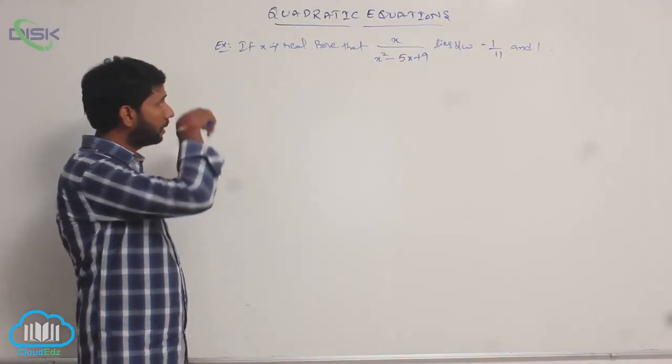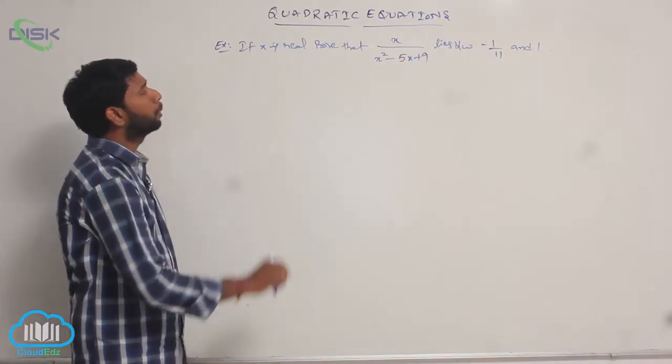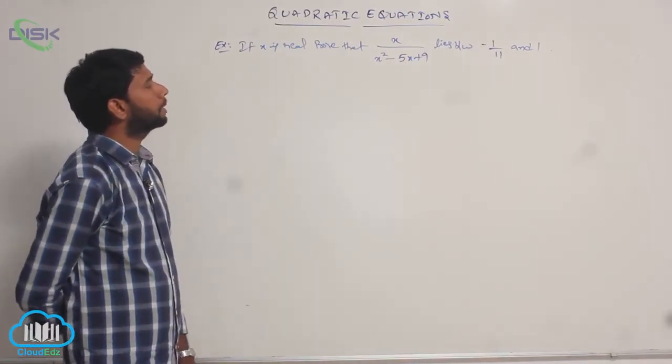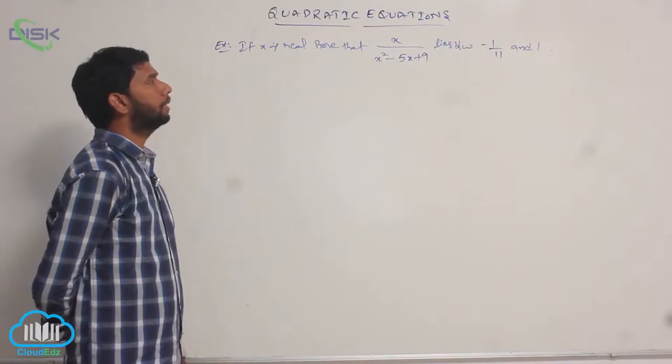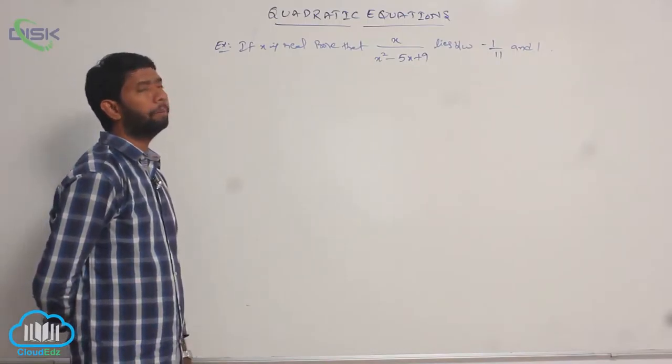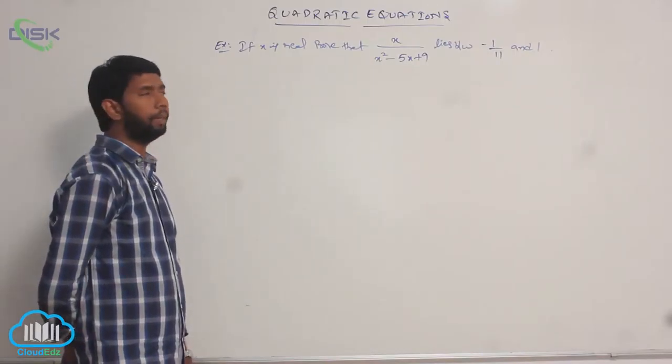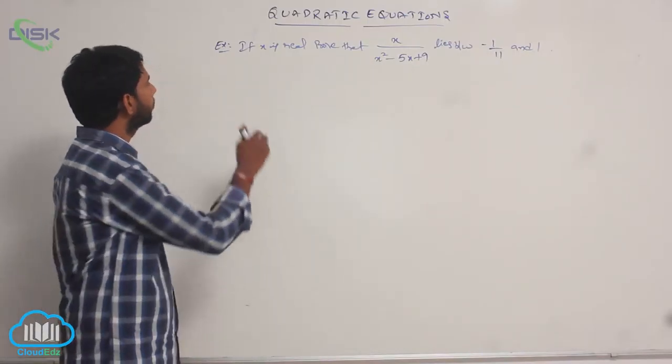The next example: if x is real, prove that x divided by (x² - 5x + 9) lies between -1/11 and 1.